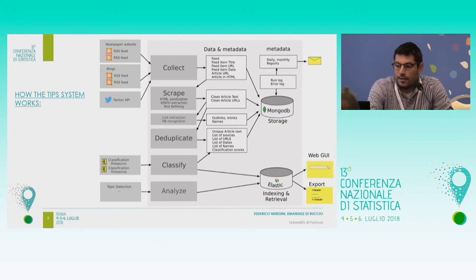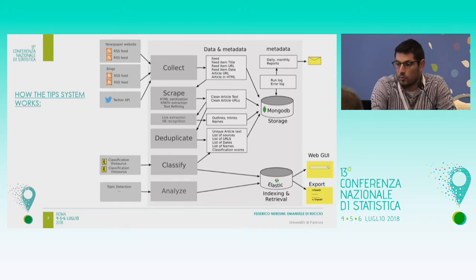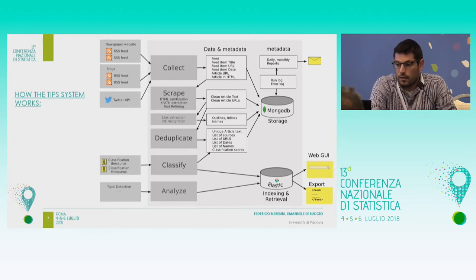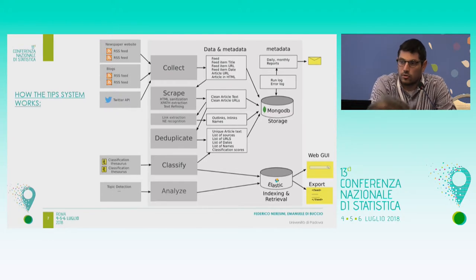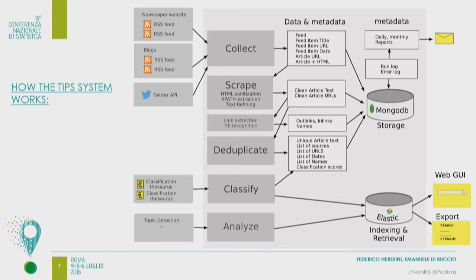Abbiamo progettato e implementato, come intero team multidisciplinare, una metodologia implementata in un sistema informativo. Questi sono i passi principali e i corrispondenti moduli nel sistema informativo. Abbiamo un modulo che si occupa di collezionare documenti da fonti diverse — articoli di giornali, testate giornalistiche online, blog, e più di recente anche da canali Twitter. Parte dello sforzo è stato modellare le risorse informative eterogenee in maniera uniforme. La tecnologia su cui ci appoggiamo per blog e news è quella di tipo RSS: giornalmente, più volte al giorno, andiamo a vedere quali articoli sono stati pubblicati.